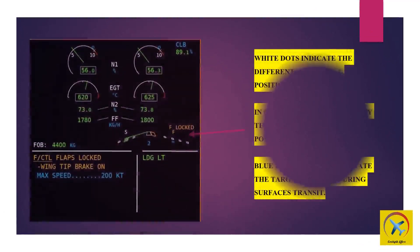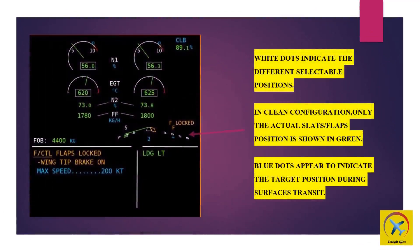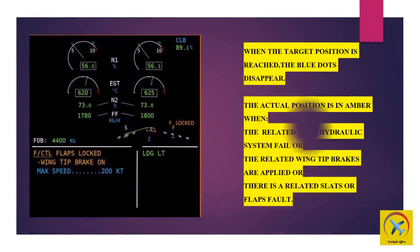White dots indicate the different selectable positions. In clean configuration, only the actual slats or flaps position is shown in green. Blue dots appear to indicate the target position during surface transit; when the target position is reached, the blue dots disappear. The actual position is shown in amber when the related both hydraulic systems fail, the related wingtip brakes are applied, or there is a related slats or flaps fault.